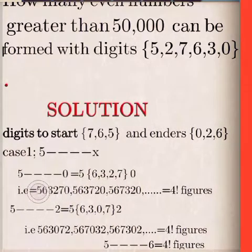Now, figures can still start with 5 and end with another even number, 2. I'll be arranging these figures now—zero is now among the middle figures. There are 4 factorial figures this way as well.